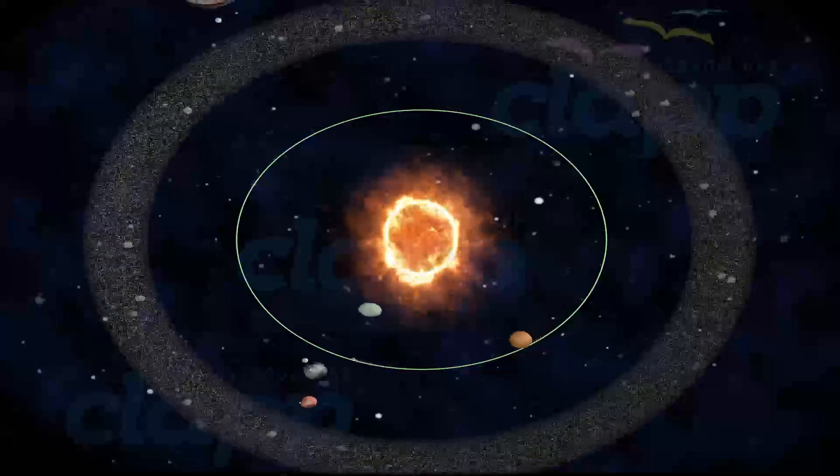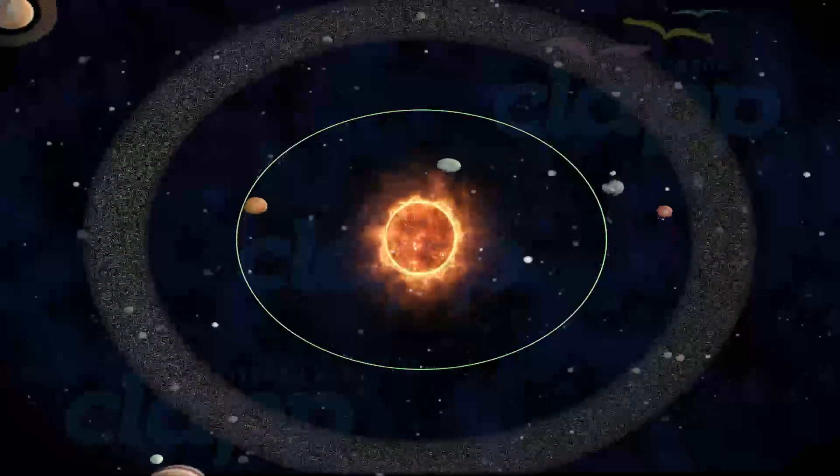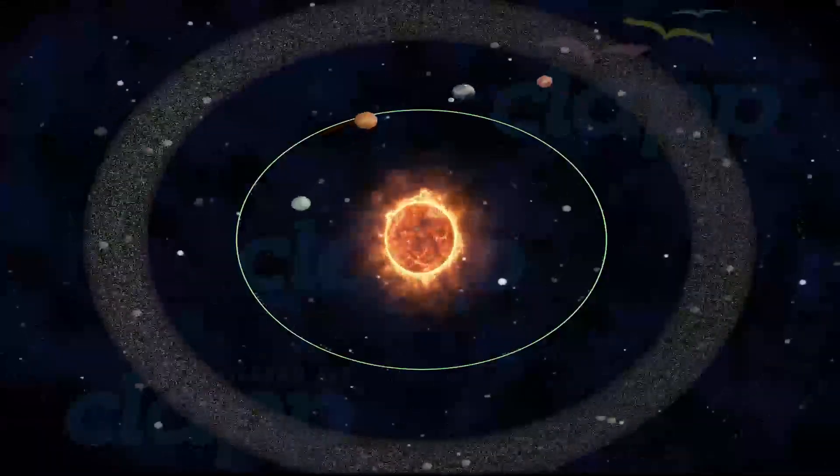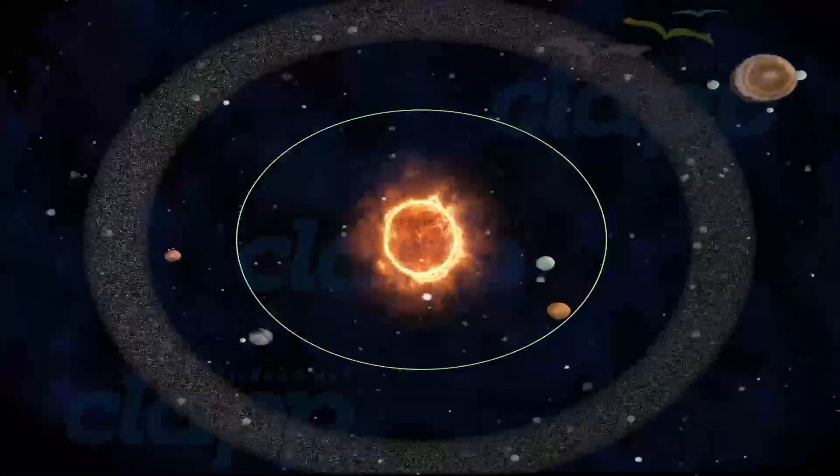Venus is orbiting around the Sun at an average speed of around 35.02 km per second. It takes 224.7 Earth days to complete an orbit around the Sun.